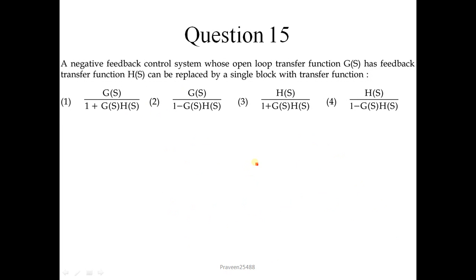Question number 15: A negative feedback control system whose open loop transfer function is G(s) and feedback transfer function H(s) can be replaced by a single block with transfer function. The direct formula is G(s) upon 1 plus G(s)H(s). So correct option is 1.